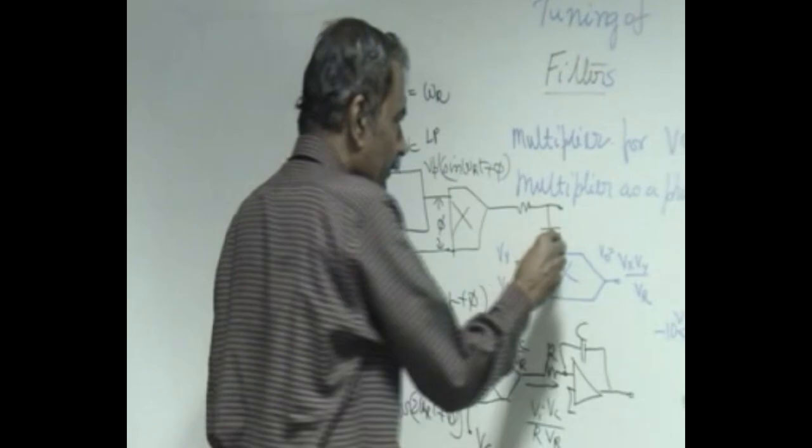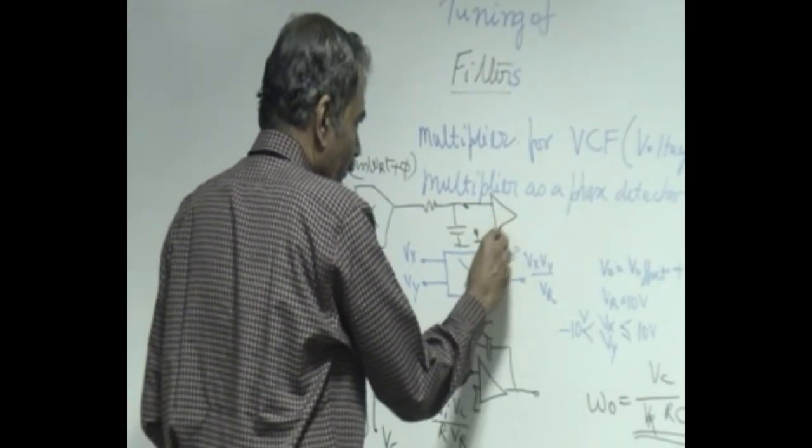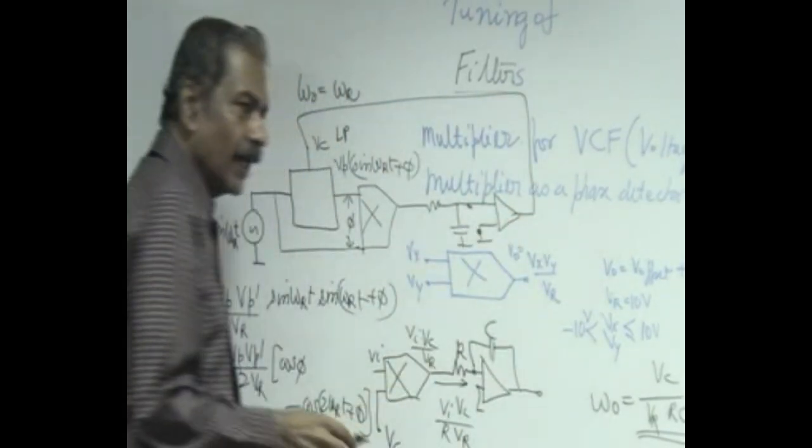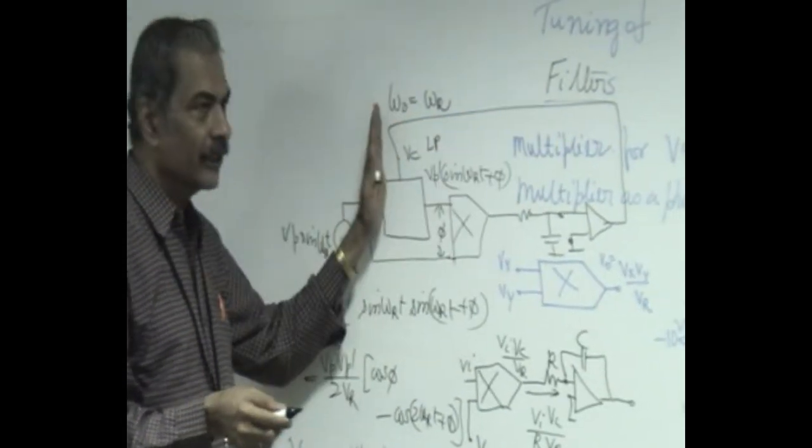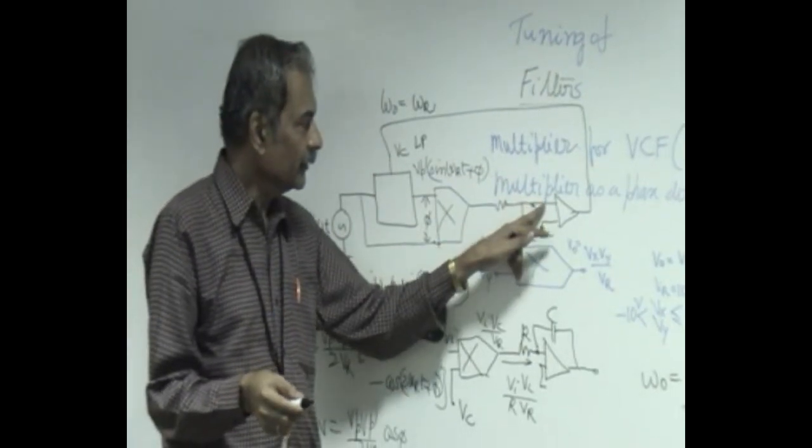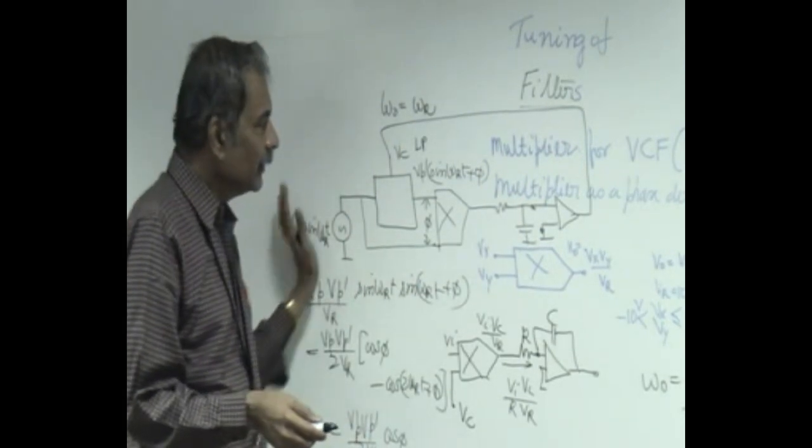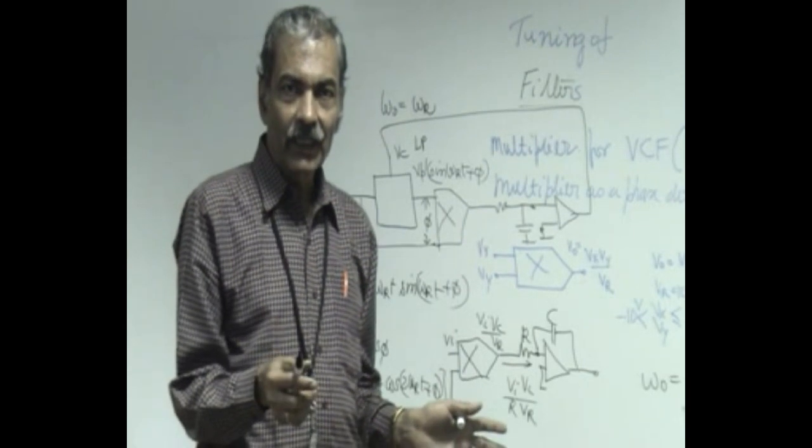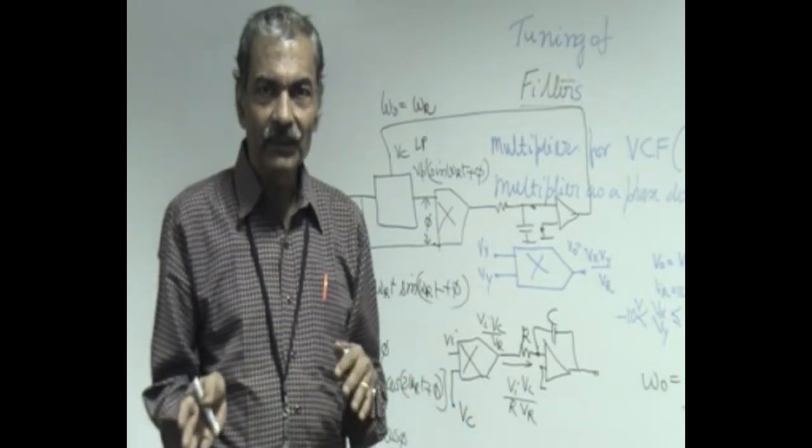So, if therefore, we compare it with 0 reference and put a comparator amplifier and then connect it back and if this is a negative feedback system this automatically adjusts the control voltage such that this voltage is same as 0. That means, every time some input is coming this gets adjusted to 0 which means all the time it is getting tuned to the incoming frequency. This is called a self tuned filter.